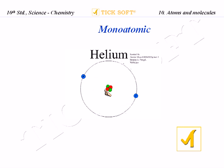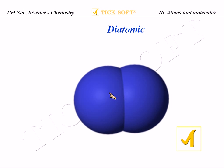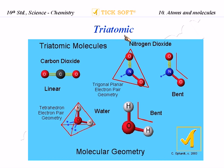For diatomic, two atoms are combined together. For triatomic, there are many examples: carbon dioxide has one carbon and two oxygen atoms — three atoms total. Nitrogen dioxide has one nitrogen and two oxygen atoms. Water also has one oxygen and two hydrogen atoms. These are all good examples of triatomic molecules.